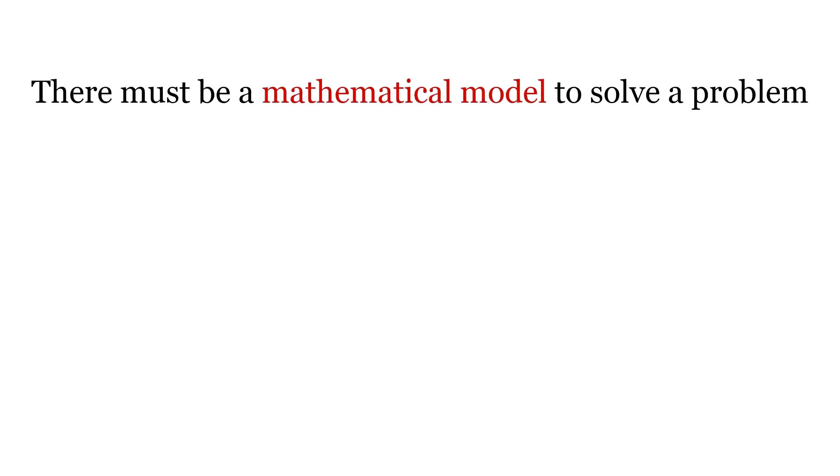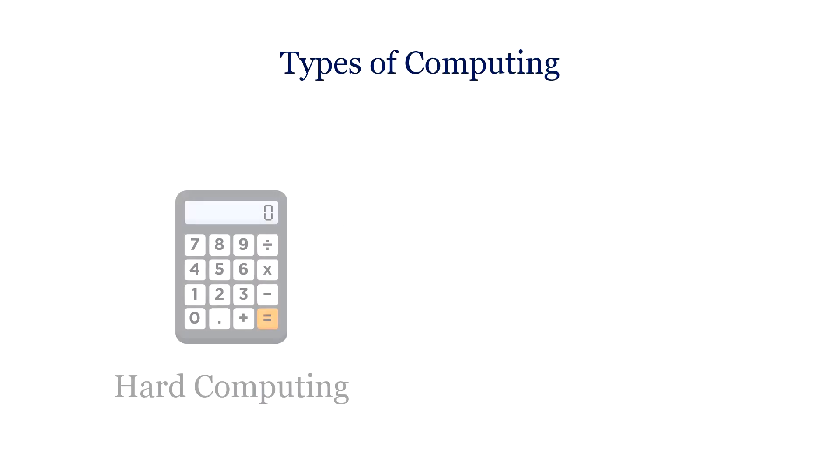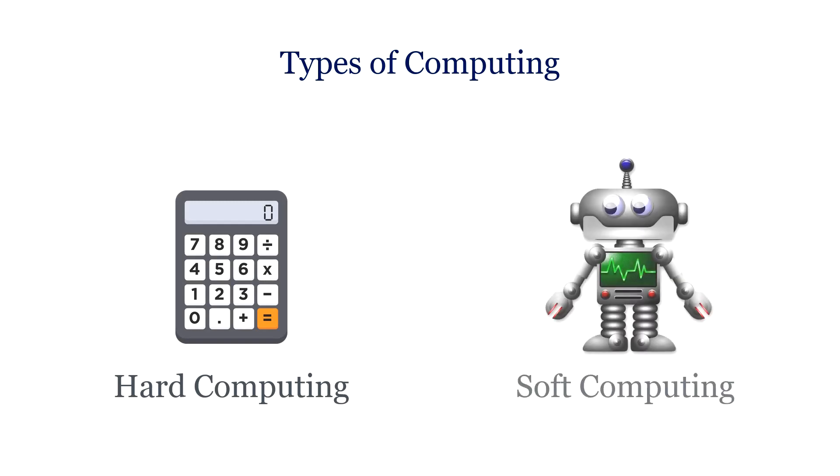The next feature is that every computing function must have a mathematical model to solve a problem. Now computing can be classified into two types: hard computing and soft computing.